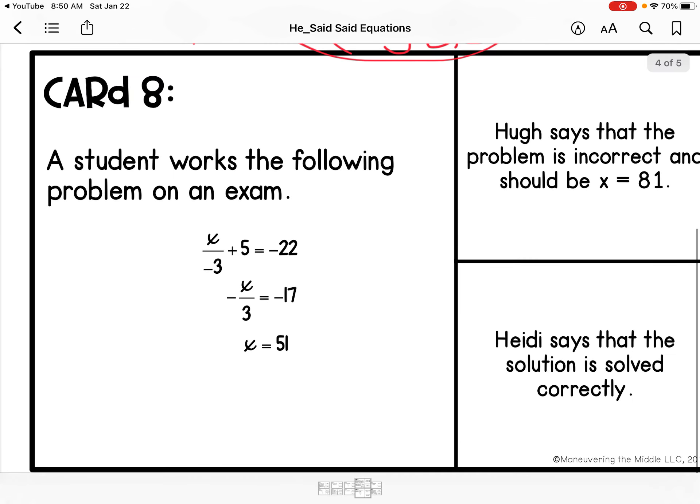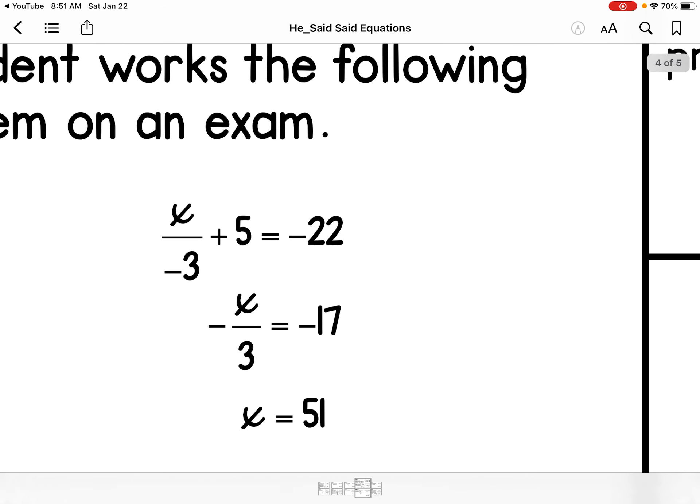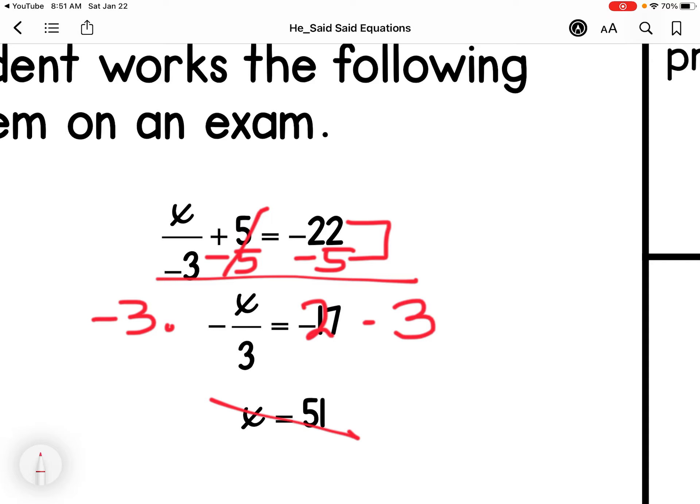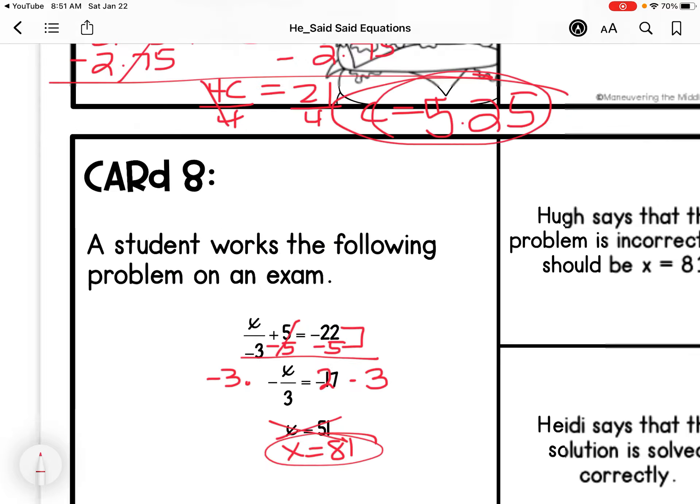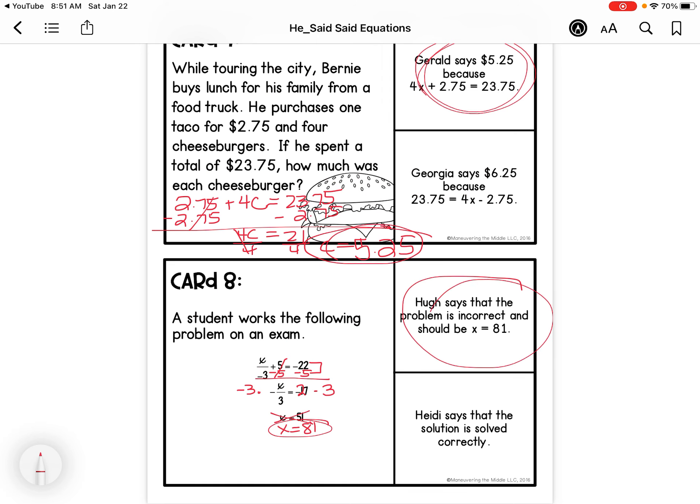A student works out the following exam problem. So we have minus 5 on each side. Signs are the same, so I'm actually going to add here. So this should be negative 27. Then I'm going to multiply by negative 3 on each side. So this is going to be X equals positive 81. So Hue is correct.